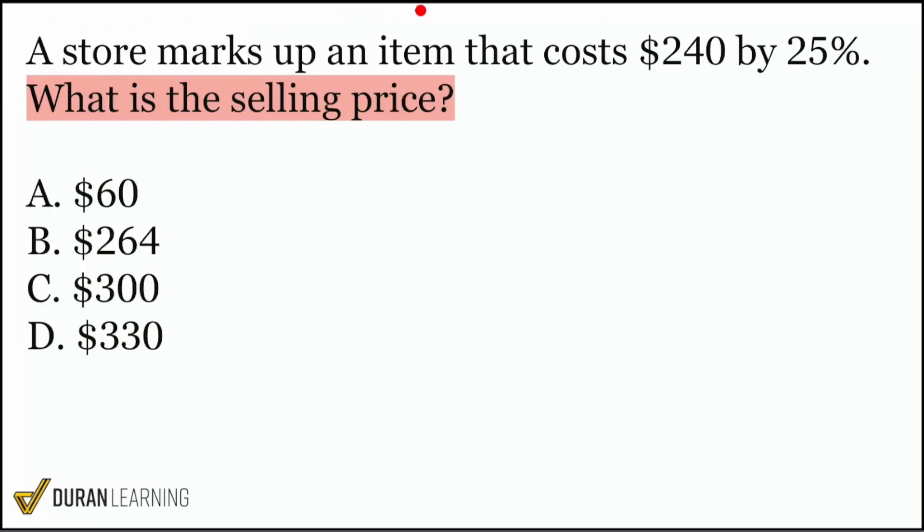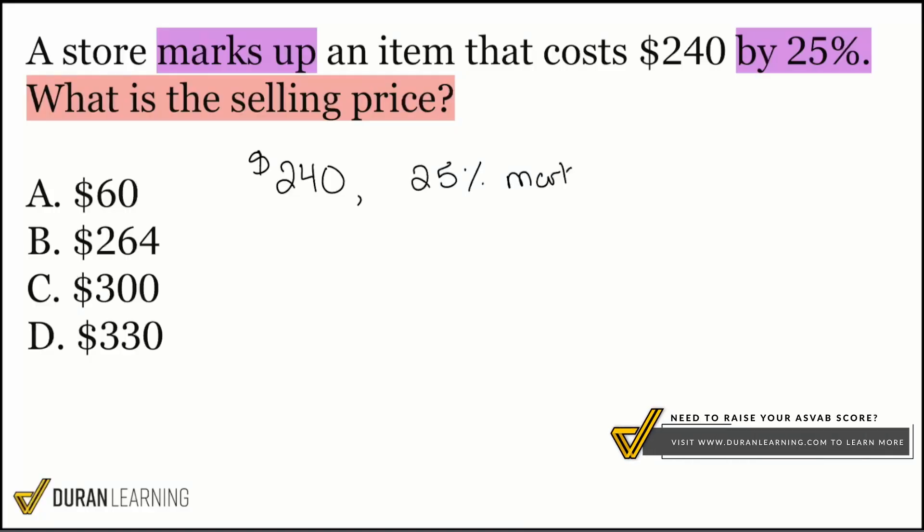So a store marks up an item that costs $240 by 25%. Okay, so everybody, riddle me this. If we have this item that costs $240, and we are marking it up, as they say here, marking it up by 25%, what does that 25% really represent? What does that 25% represent? Yeah, it represents a markup. And what do we do with markups, everybody? If we're trying to get the selling price, so that final price that we sell it for, what are we doing with the markup once we calculate the actual amount of that markup?